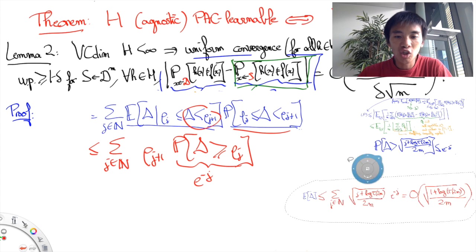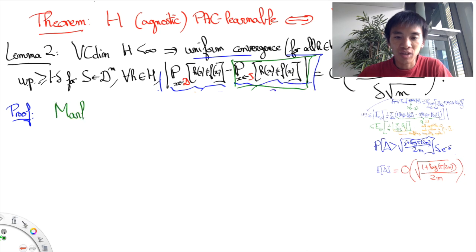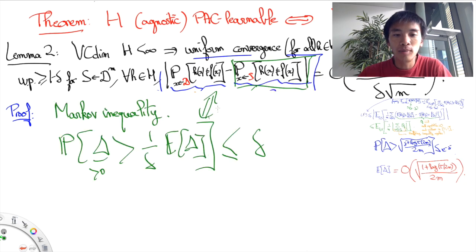To conclude, we need to convert this upper bound on the expectation into a high probability event. You can do this using the Markov inequality.